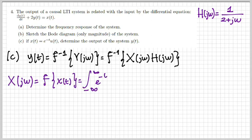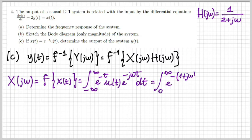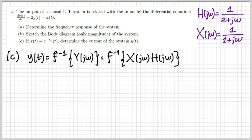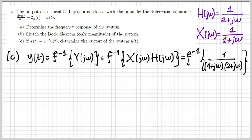First, we need to calculate the Fourier transform of the input. It's a simple right-sided exponential that we've seen many times in previous classes. The result is X(jω) = 1/(1 + jω). Now we know H(jω) and X(jω) and their product. We need to calculate the inverse transform of that product.